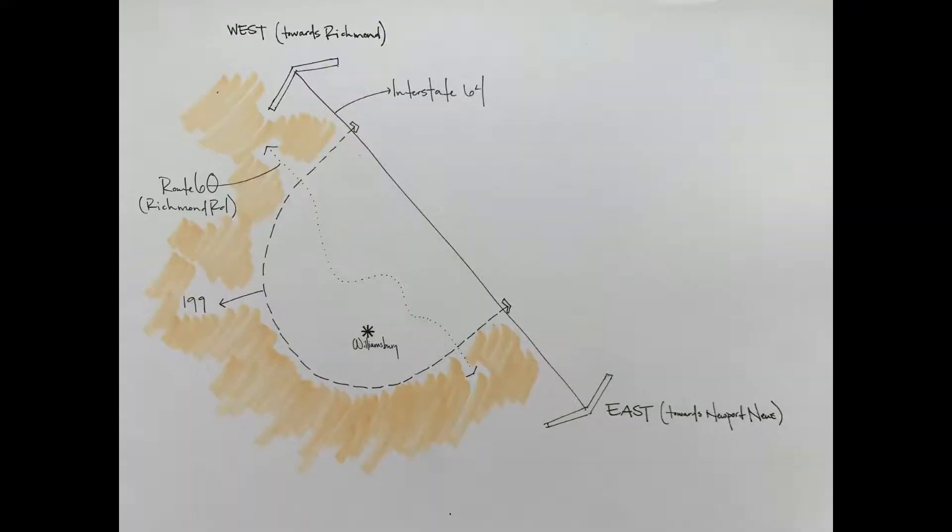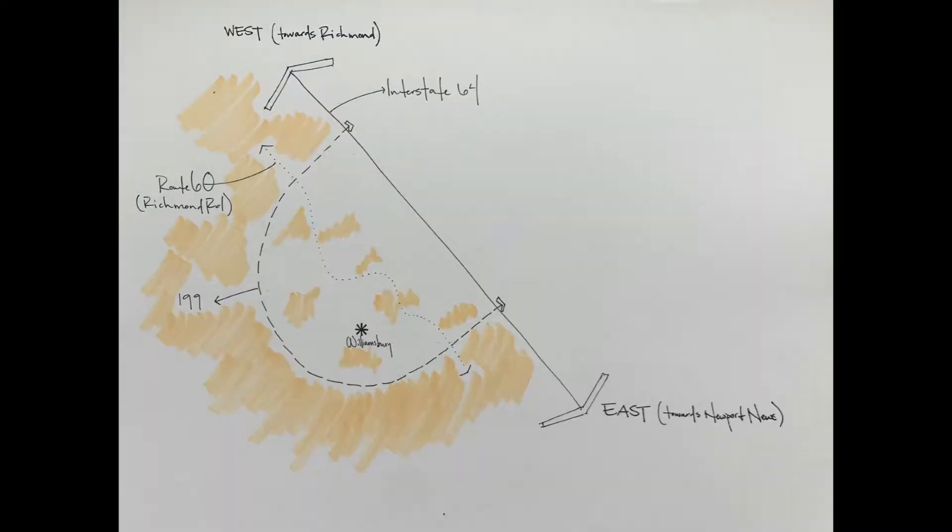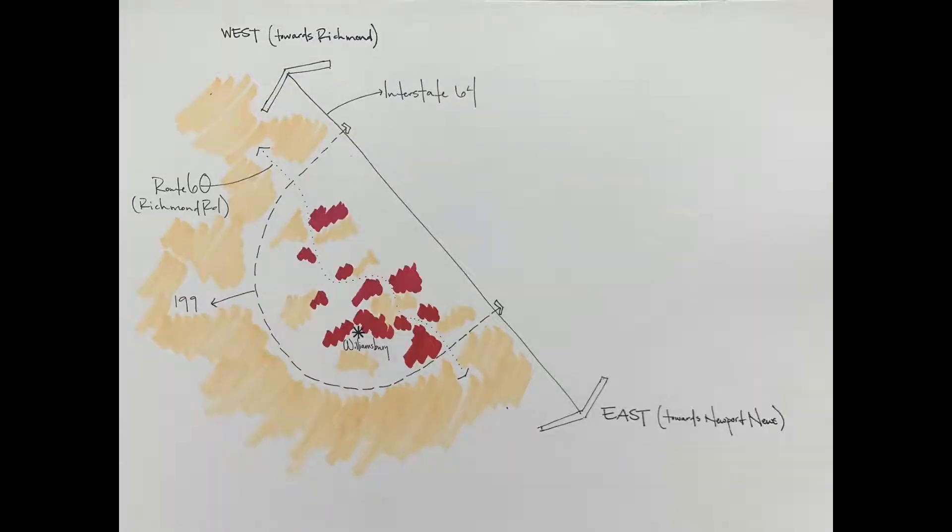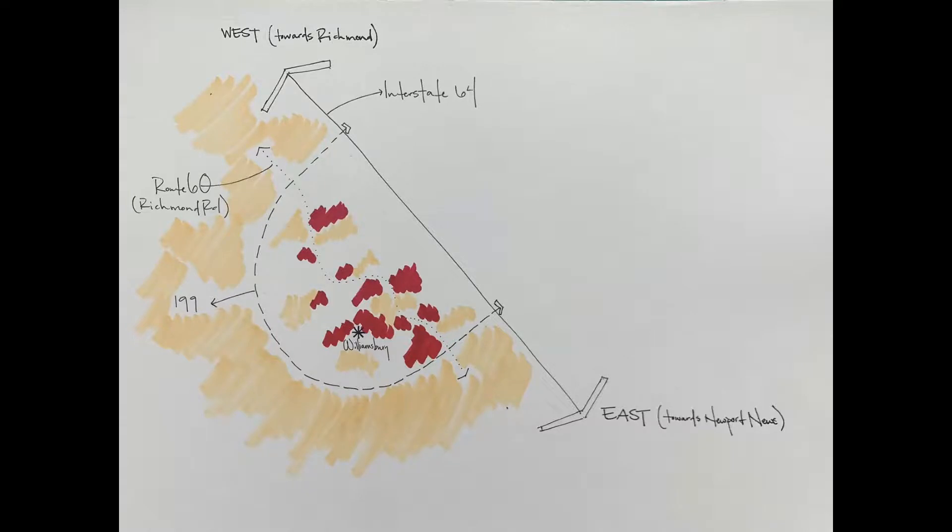In terms of land use, many people live outside of 199 itself and there are a few neighborhoods within it shooting off of Richmond Road, as shown in the yellow. Richmond Road is home to most of the commercial and mixed-use areas of Williamsburg, as shown in the red, or the schools and civic functions, shown in blue.